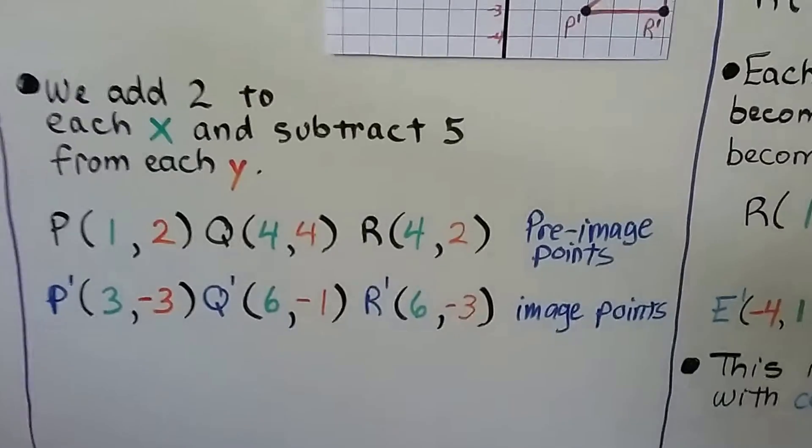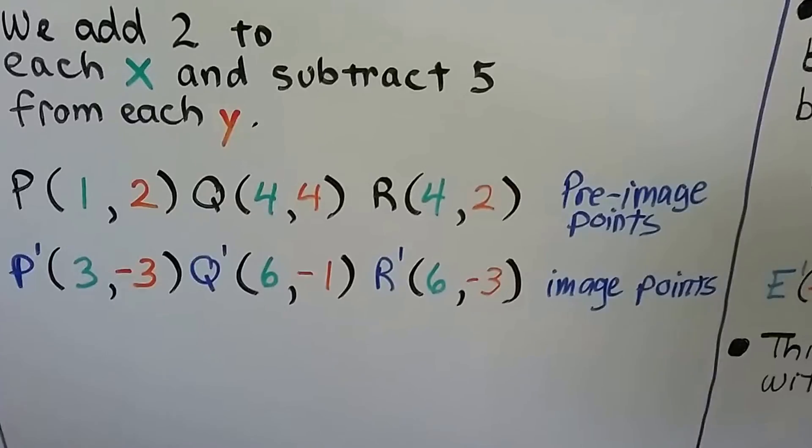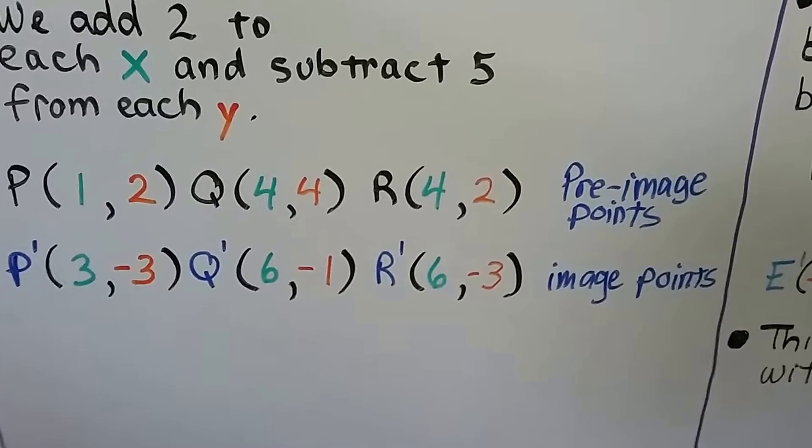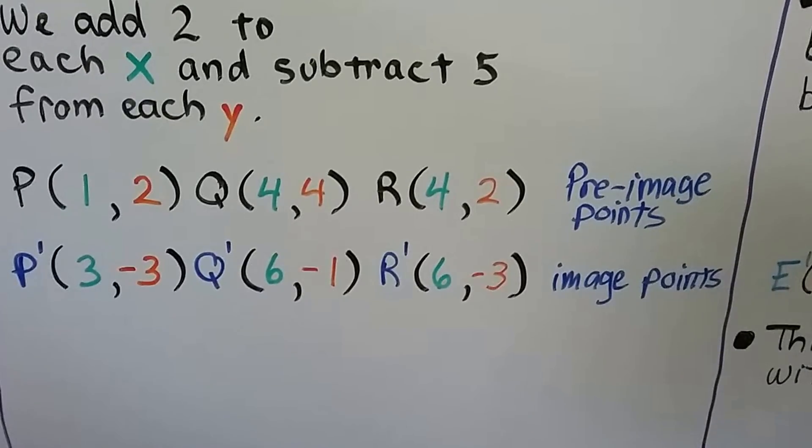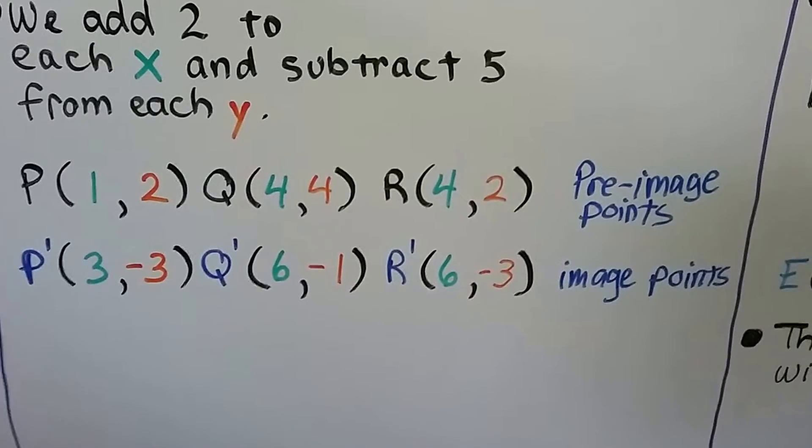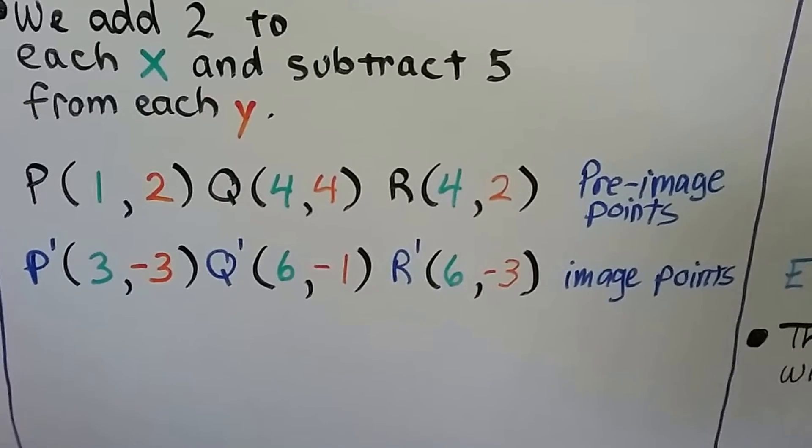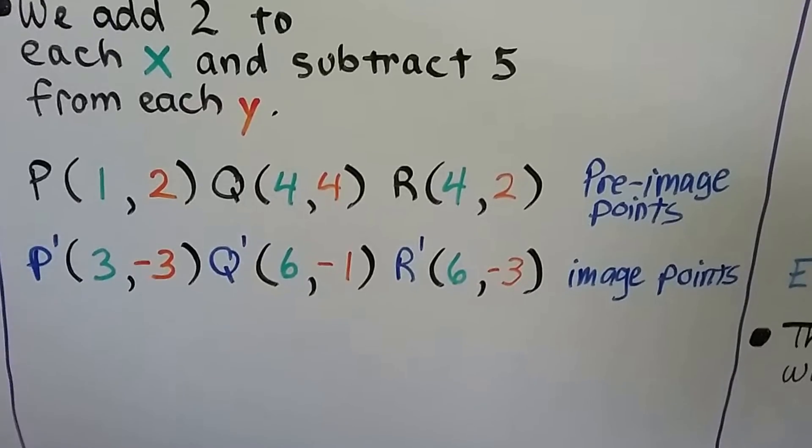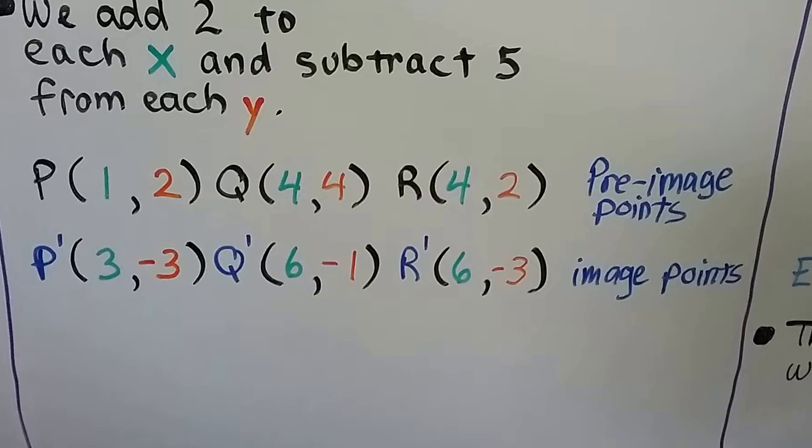And the y will become a -3 because we're subtracting 5 from the y value for point P. For point Q, we had a (4, 4). We're going to add 2 to the x, so it becomes a 6, and we're going to subtract 5 from the y, so it becomes a -1. For R on the preimage, we had a 4 for x, so on R' it's going to become a 6. We add 2. And for the y value for R, we're going to subtract 5, so we're going to get a -3.